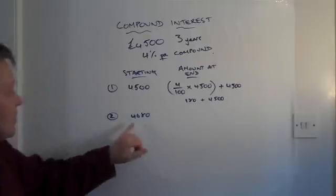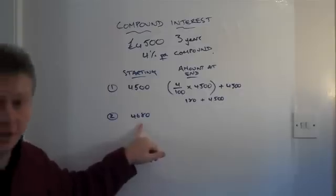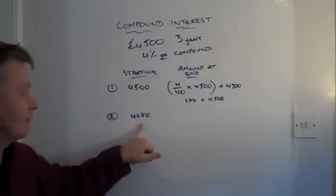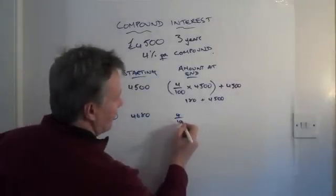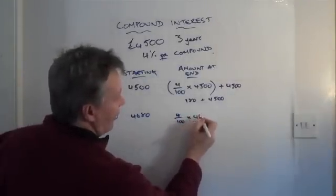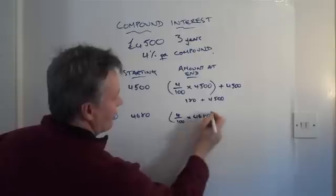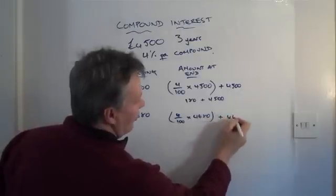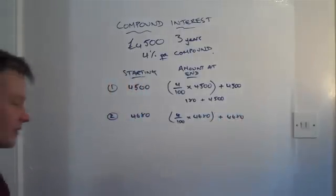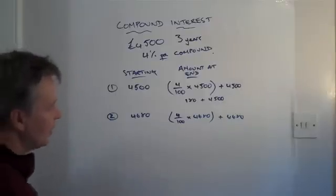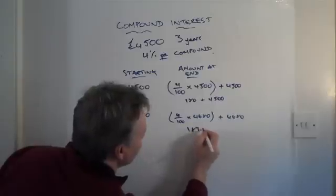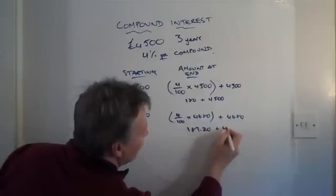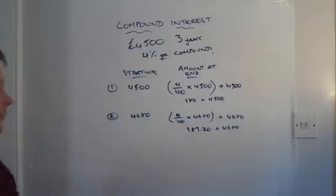So he begins the second year with £4,680. And then at the end of the second year he's got 4% of £4,680 plus £4,680. So at the end of the second year he's got £187.20 plus £4,680 which is £4,867.20.